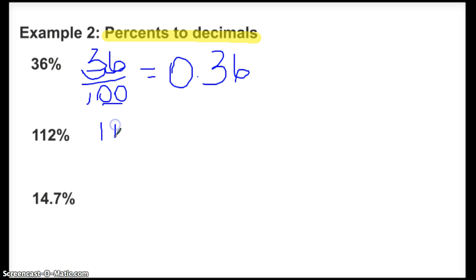Same thing here, 112% out of 100. It's 112%, that means it's going to be more than 1. So if I were to divide this, once again, I move my decimal because of the 100, two places to the left. That leaves me with 1.12.